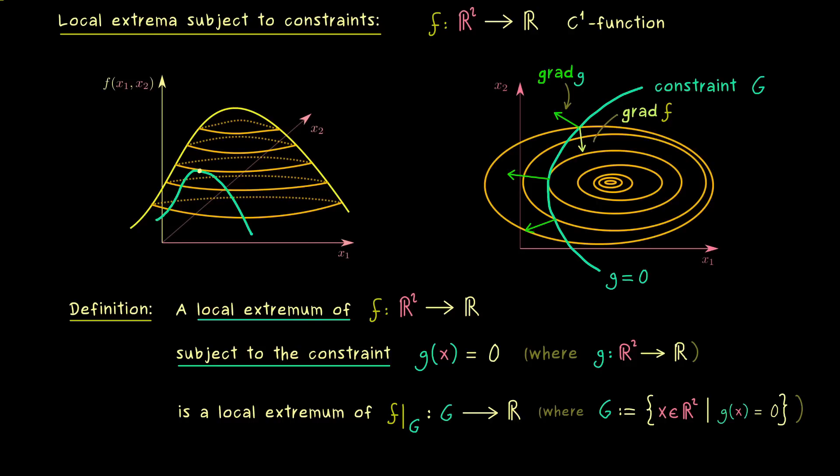For example at this point here the gradient of f points downwards, which means we will increase the value of f if we continue here on the line. This thing is true until we reach this special point here, because at this point the gradient of f is also perpendicular to the constraint G.